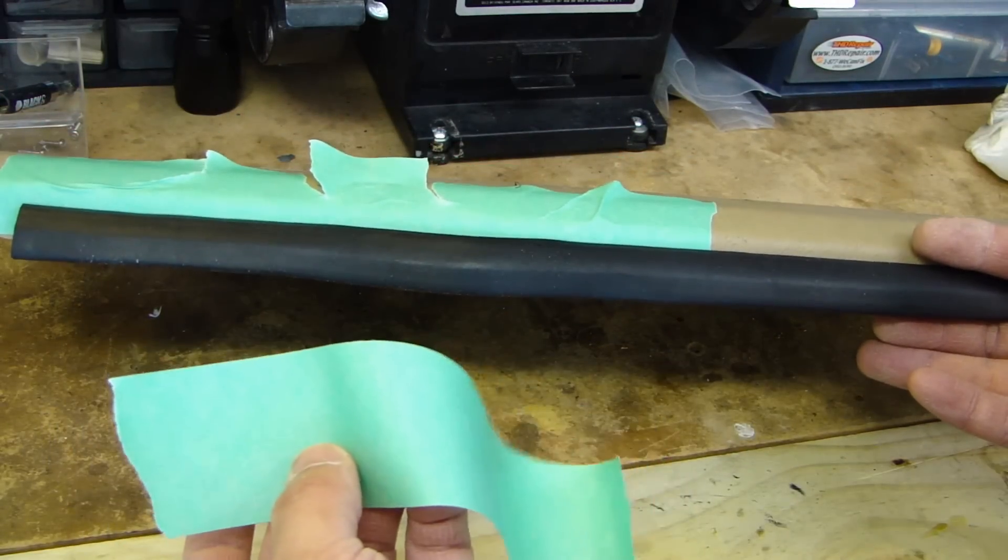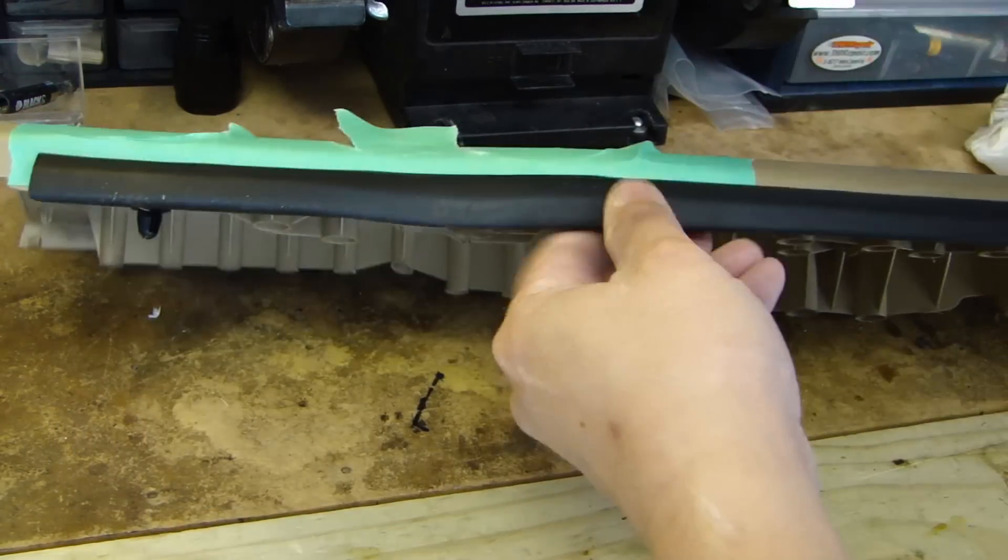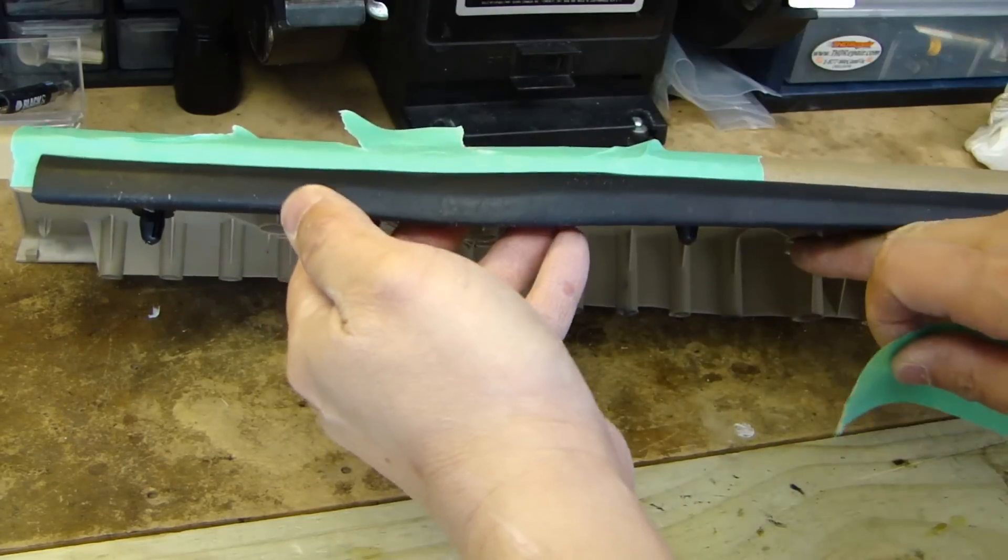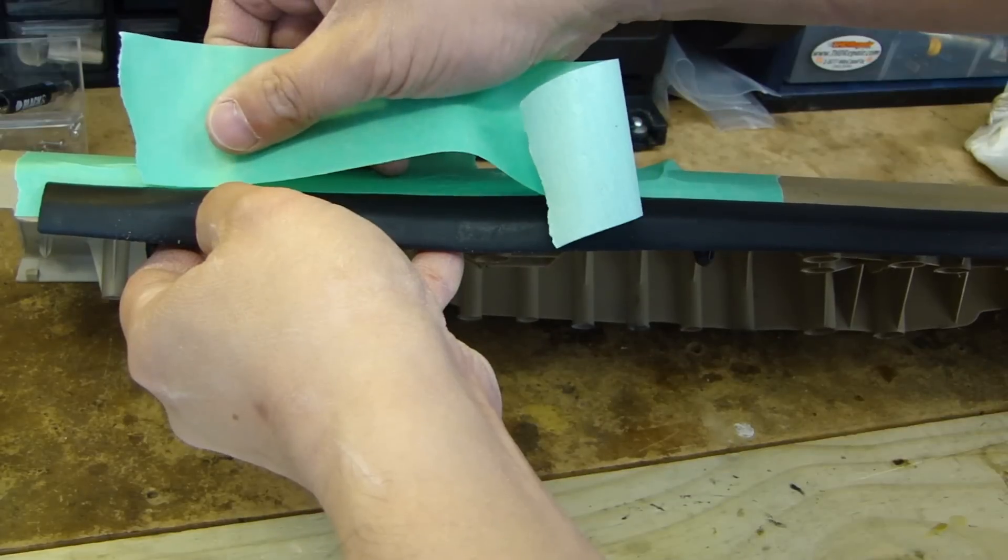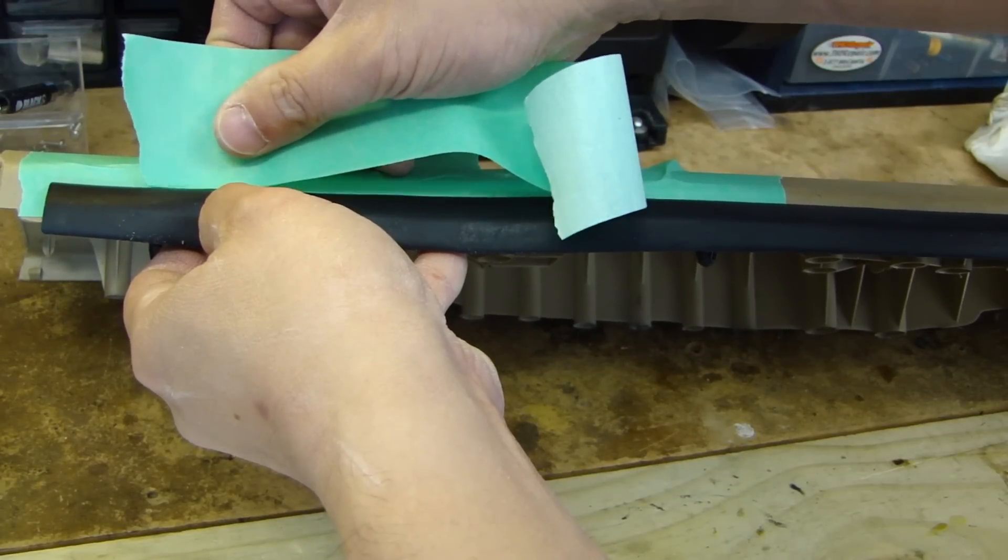Now get yourself a second piece of painter's tape, and what you want to do is look at this straight on and put this piece lining up right to the top edge.